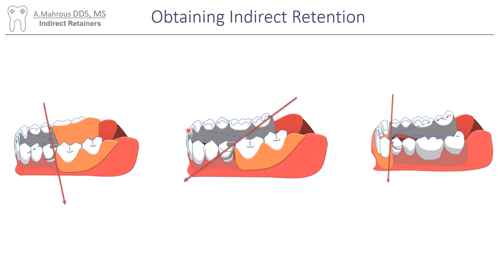In order to select a proper location for an indirect retainer, you must first identify the fulcrum line. Here are the different fulcrum lines for all the different classifications. Afterwards, you'd project a line perpendicular to that fulcrum line, going as far away from it as possible. In this case you'll end up at the canine. In a class 1, you'd usually end up at the central incisors, which are not that strong, so it's recommended to split that line into two in order to hit the canines.